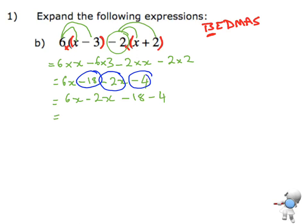So that simplifies to 6x minus 2x, which gives me 4x, and minus 18 take away 4 gives me minus 22. And there's your answer.